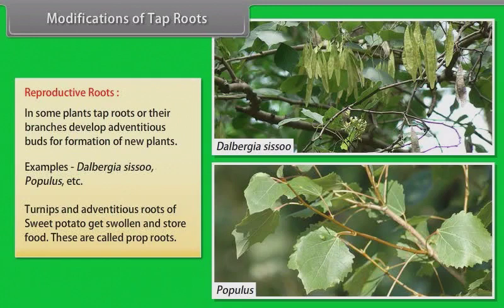Turnips and adventitious roots of sweet potato get swollen and store food. These are called prop roots.